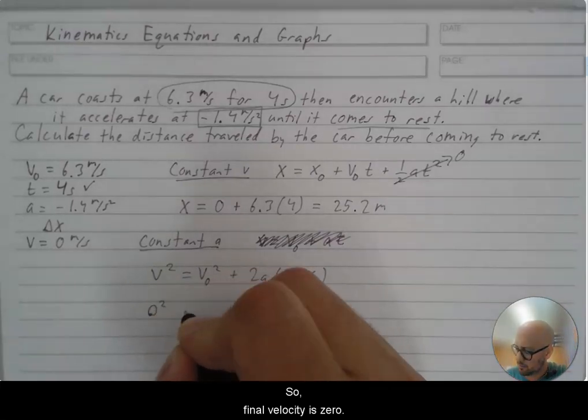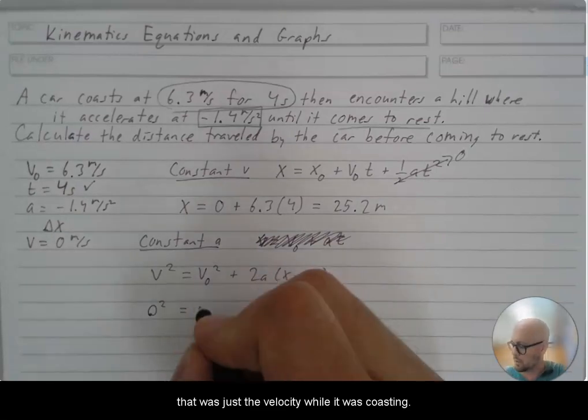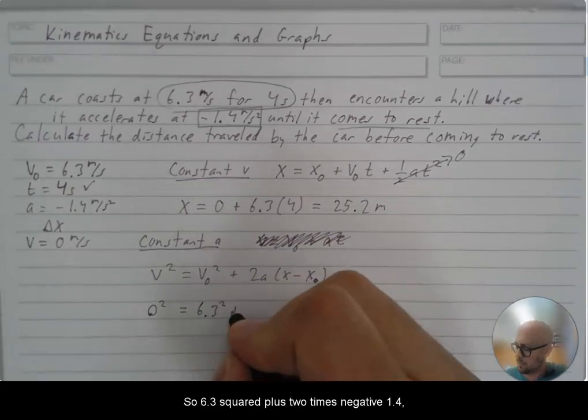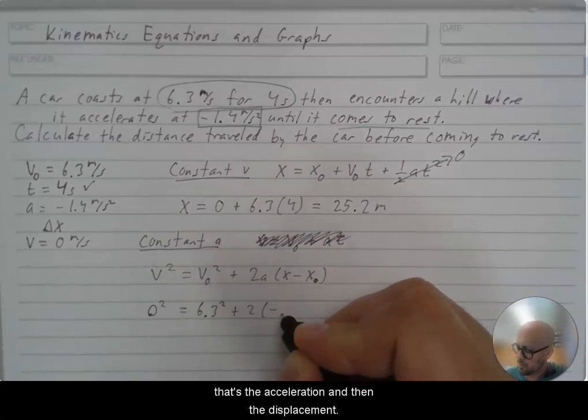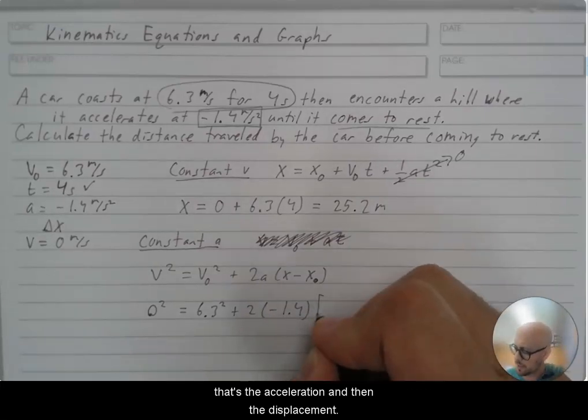So let's see how that works out. So final velocity is zero. Initial velocity, well, that was just the velocity while it was coasting. So 6.3 squared plus 2 times negative 1.4. That's the acceleration. And then the displacement.